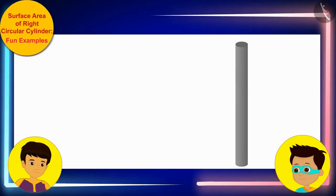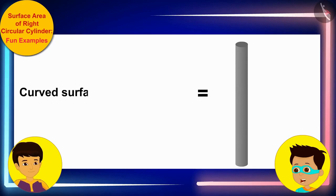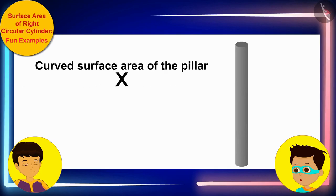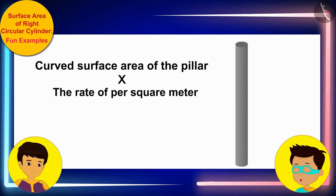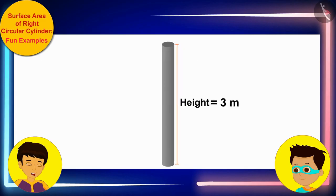Manas, to help uncle, we have to first find the curved surface area of this pillar. Then, we can multiply it by the rate per square meter and find the total cost of coloring the pillar. The height of the pillar is 3 meters and its diameter is 35 centimeters.